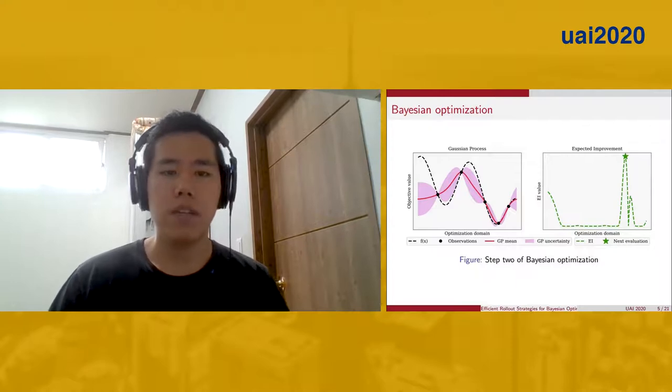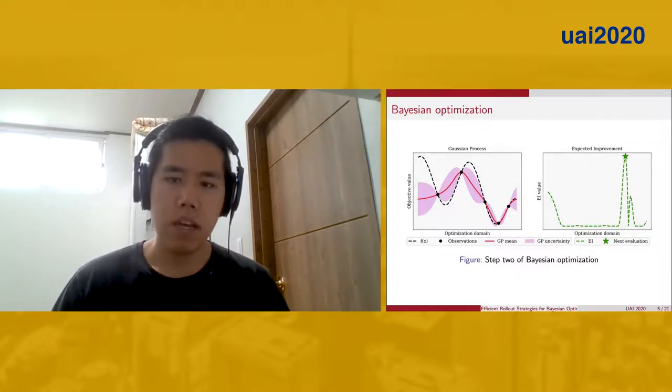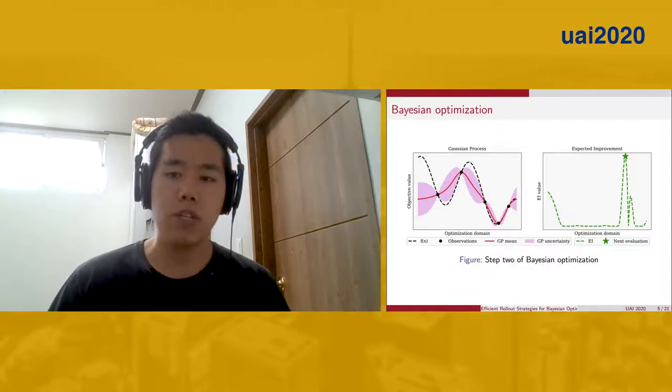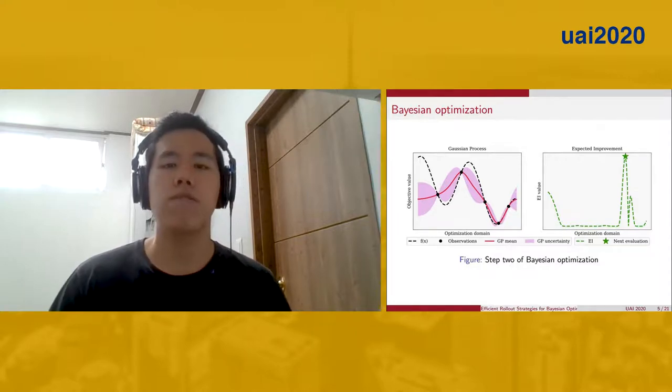Once we evaluate the next point, we can update our model, which you can once again see on the left. In fact, our next evaluation is quite close to the global minimizer, so we can stop here. But in general, we can query the acquisition function and repeat this process for a fixed number of iterations.